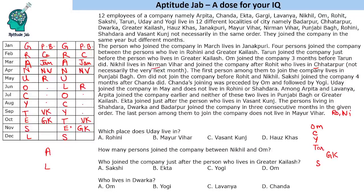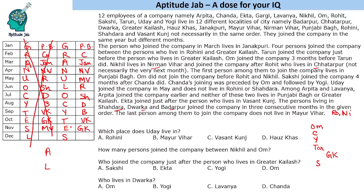Three localities — Shahadra, Dwarka, and Badarpur — belong to people who joined in consecutive months. It is also given that the last person does not live in Mayur Bihar. Additionally, Uday does not live in Rohini or Shahadra. In one of the cases we are getting Uday with Rohini, so that case gets eliminated. This leaves us with the final valid case.